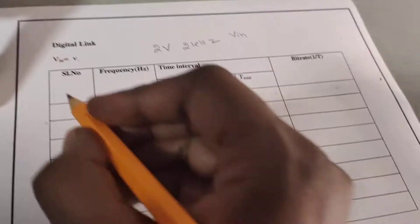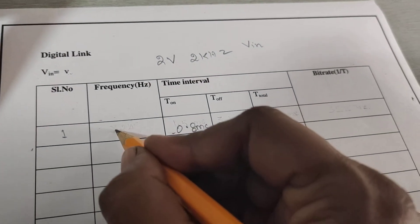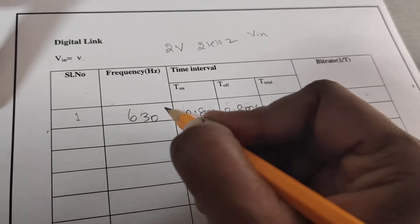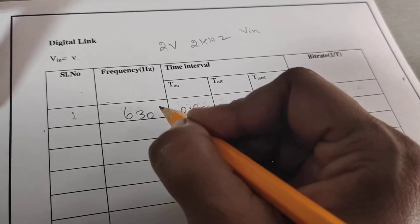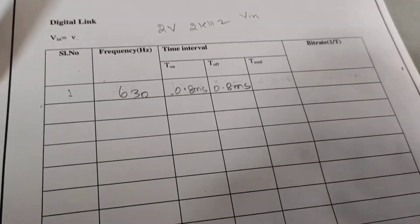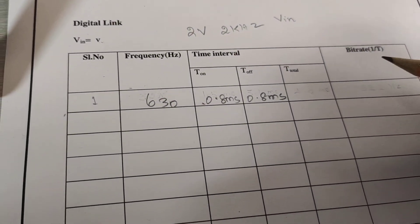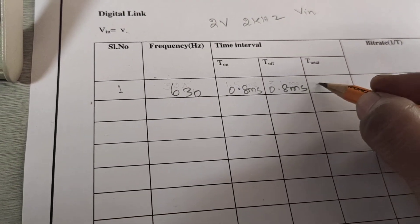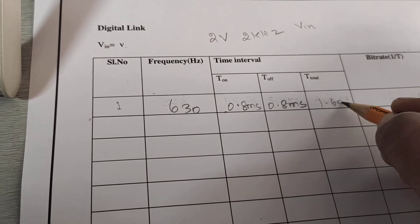We note down that the first reading, the frequency is 630 Hertz. We started from the Hertz to kilohertz. And we calculate the T total 1.6 millisecond.